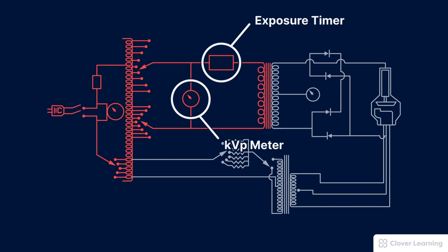The exposure timer is placed in the primary side of the circuit to control how long the exposure stays on. And this makes sense. Since the primary circuit controls the kVP, it makes sense that the exposure timer needs to be in the primary circuit.